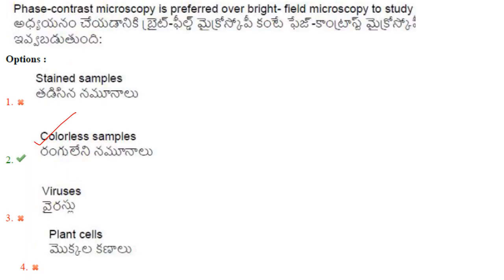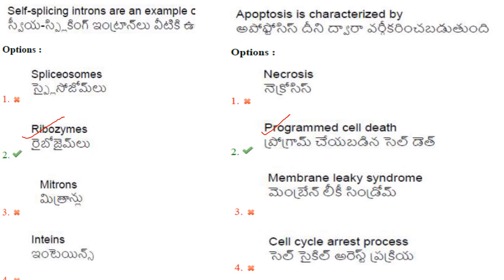Phase contrast microscopy is preferred over bright field microscopy to study colorless samples — answer is option 2. Self-splicing introns are examples of ribozymes, which are catalytic RNA molecules — answer is option 2. Apoptosis is characterized by programmed cell death — answer is option 2.